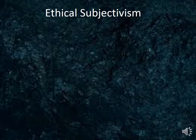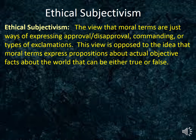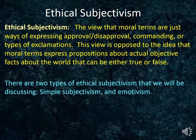Today we will be discussing ethical subjectivism, presenting some criticisms of it, and then finally saying a little something about the role that reason plays in ethics and how to approach ethical questions in general. Ethical subjectivism is the view that moral terms are just ways of expressing approval or disapproval, commanding, or types of exclamations. This view is opposed to the idea that moral terms express propositions about actual objective facts about the world that can be either true or false. There are two types of ethical subjectivism that we will be discussing: simple subjectivism and emotivism.